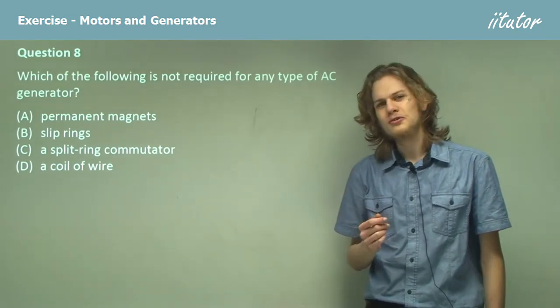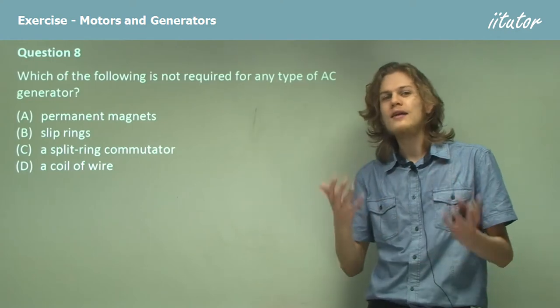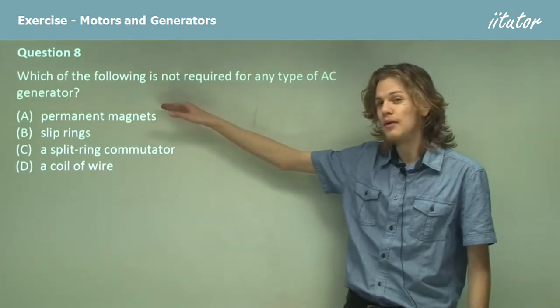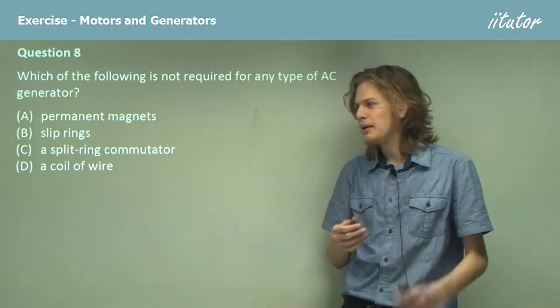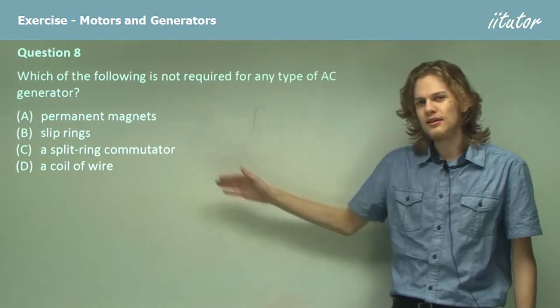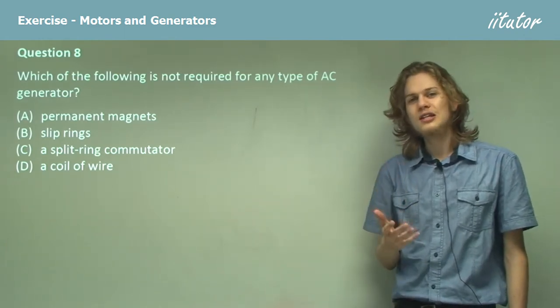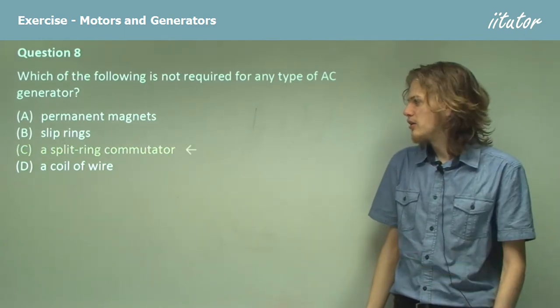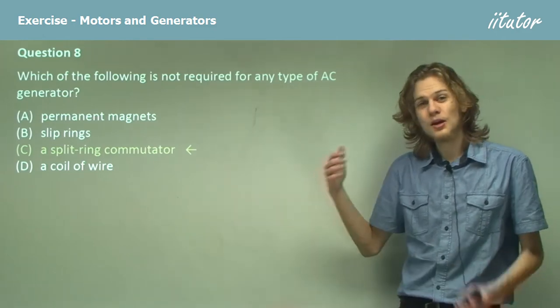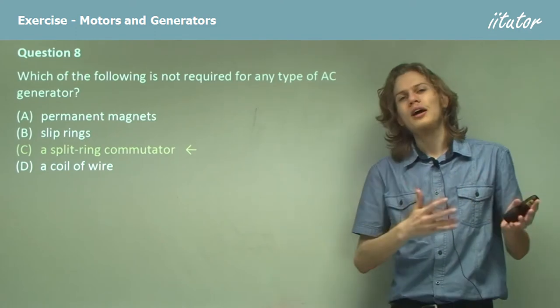This one should be fairly obvious. AC generators and motors often contain slip rings and permanent magnets to keep the coil spinning, and that means we need a coil of wire as well. In fact, the split ring commutator only appears in DC motors. So C is the correct answer. This is the main thing that separates a DC motor from an AC motor.